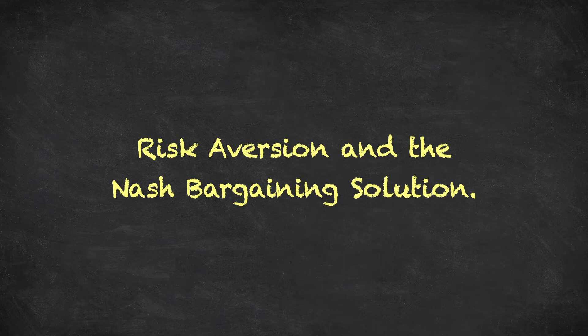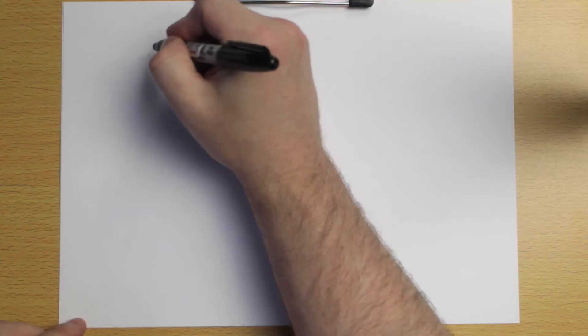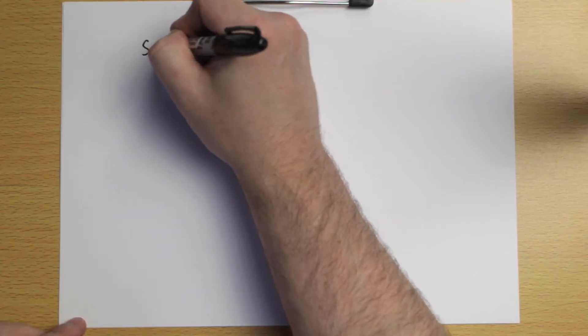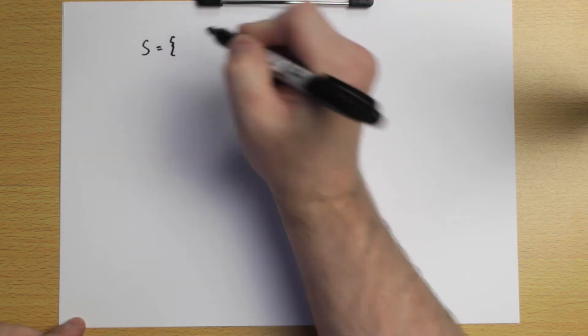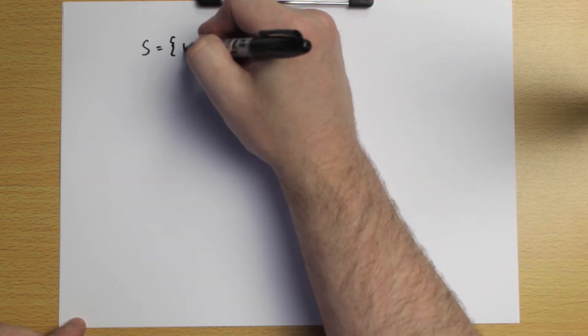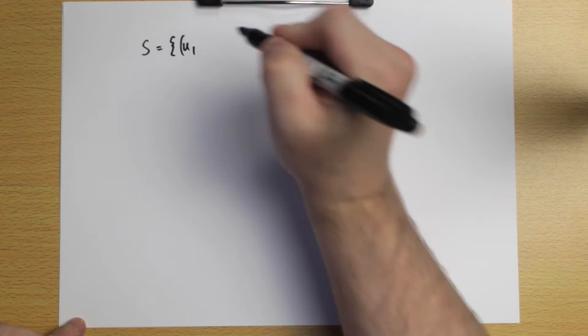We're going to examine a special case of the bargaining problem, the dividing a dollar game, in order to show a special case of a general result relating to risk aversion and bargaining. So how does being more or less risk averse affect your bargaining outcome? Let's remember the dividing a dollar game, which we introduced in the first part of the lecture.